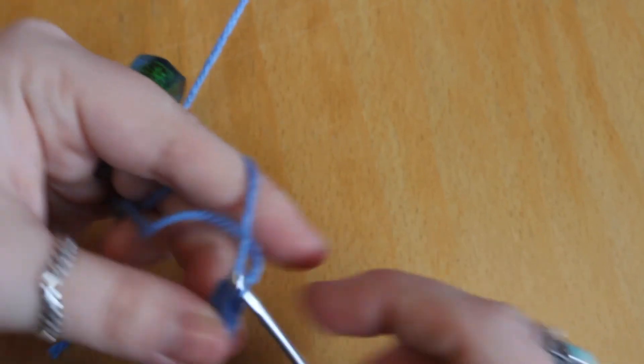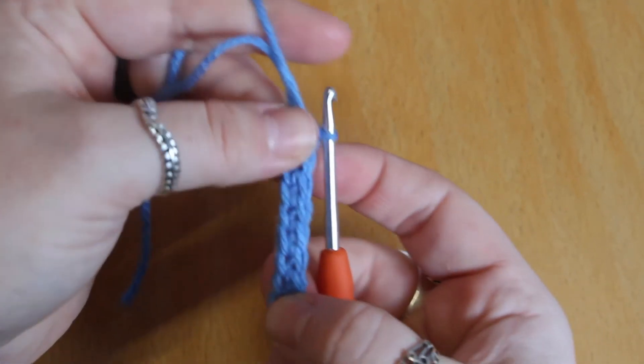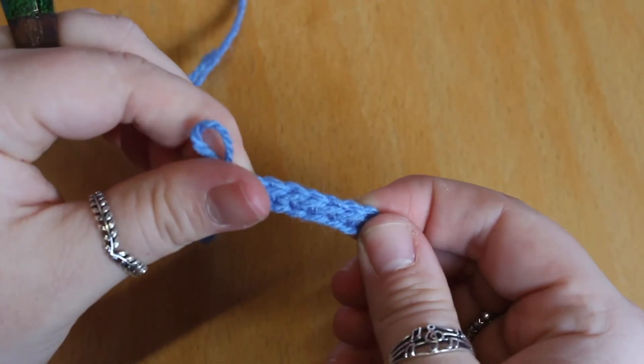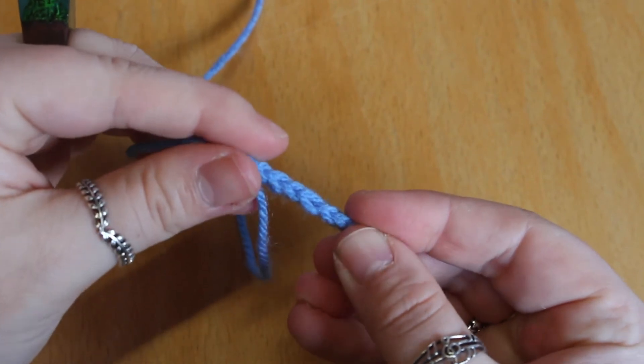Now as you can see both sides of our work look nearly identical and our work isn't twisting either. I found this method so helpful and it's revolutionized the way I work into my chains.